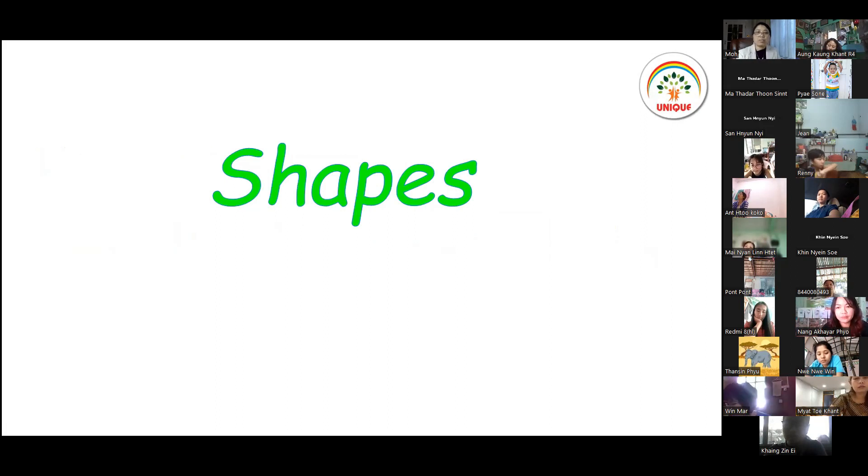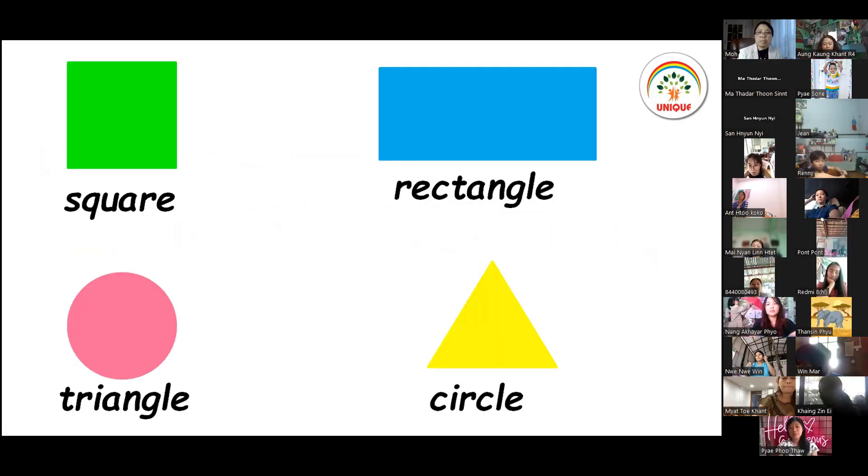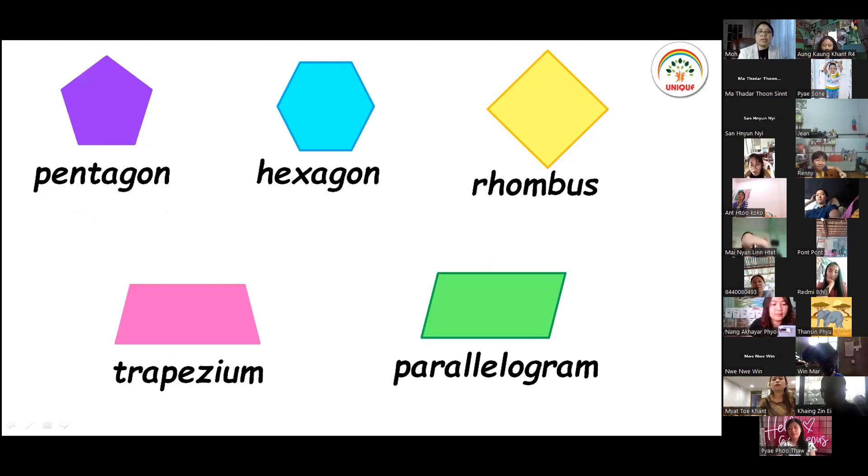We have shapes. We are going to use 2D shapes and 3D shapes. The basic shapes are square, rectangle, triangle, and circle. These are the ones that we can use.